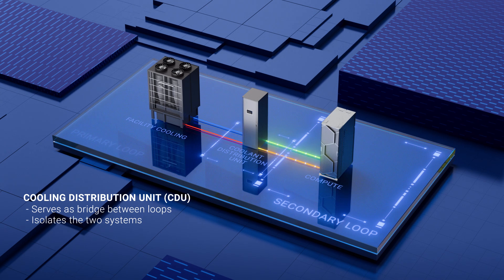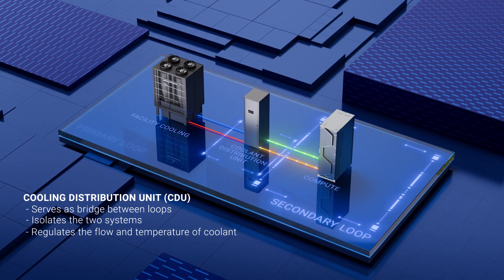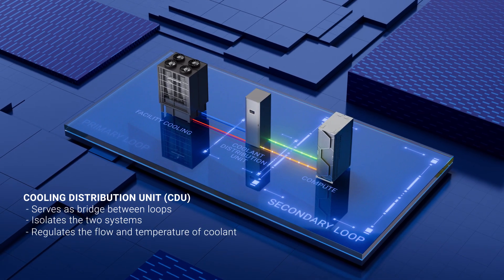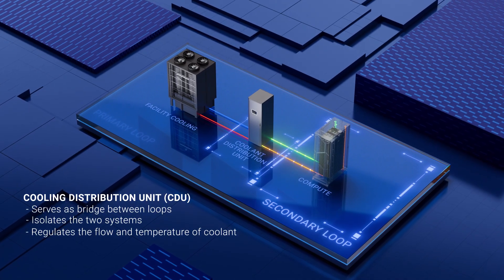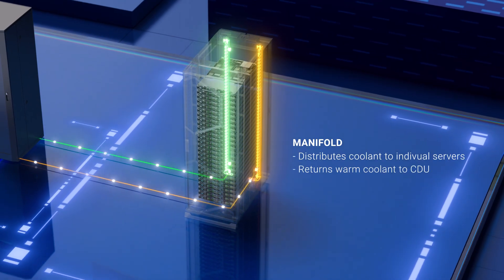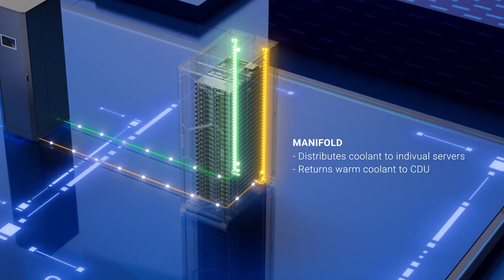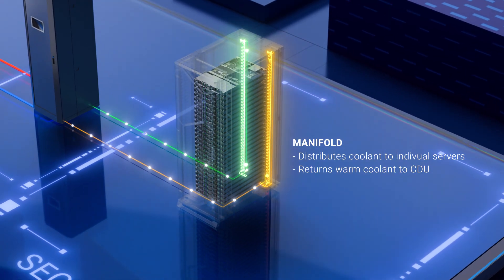Using the cool supply water from the primary network, it precisely regulates the flow and temperature of coolant throughout rack manifolds, the series of metal tubes extending the length of the rack. The manifolds distribute the coolant to individual server cold plates and return warm coolant to the CDU where the heat exchange occurs.